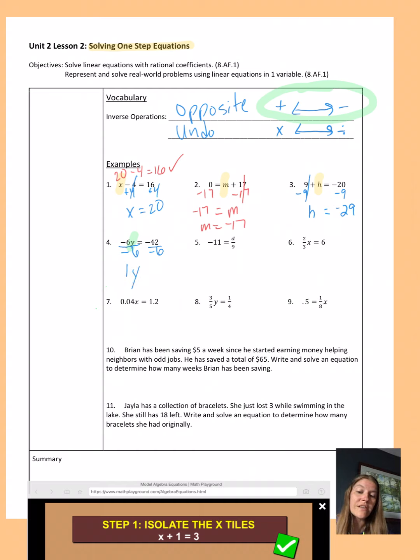Negative 6 divided by negative 6 is 1. 1y. And 1 times anything is not going to change that value. So instead we can just really simplify that. Instead of saying 1y, we can actually just say y. And then do the division. Negative 42 divided by negative 6 is a positive 7.